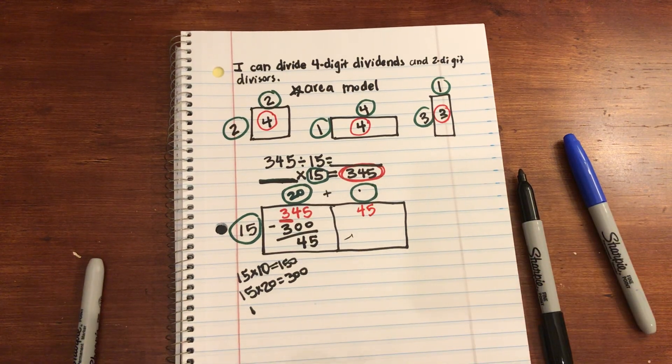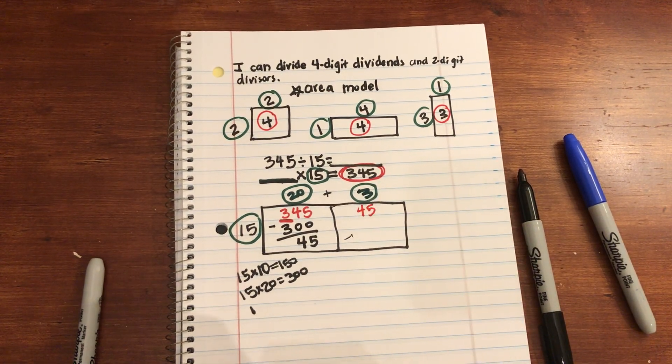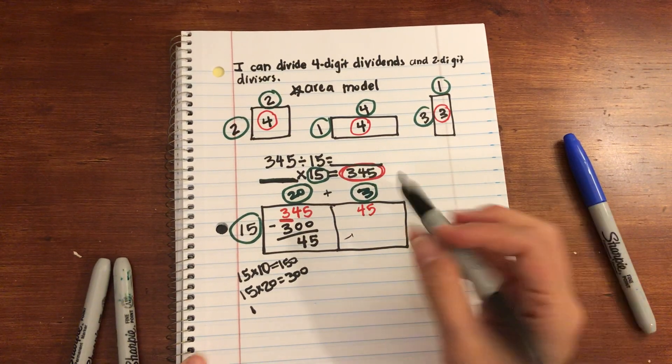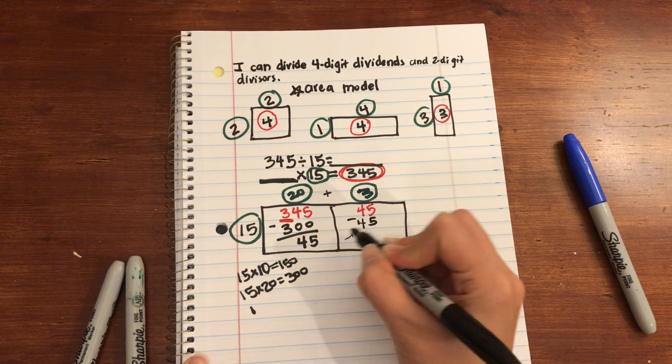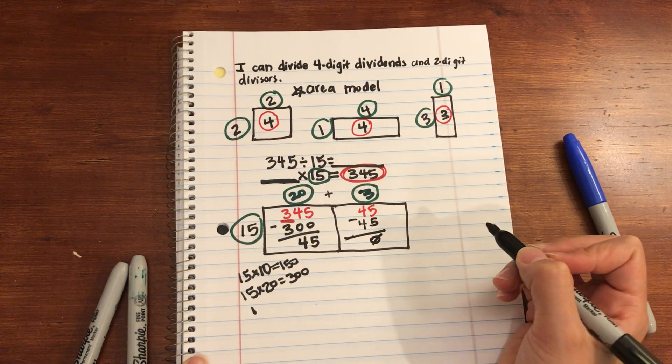So I'm going to write that as a 3. It's my other partial factor, a partial quotient looking at the first one. 3 times 15 is 45. Subtract. And I'm going to get 0.